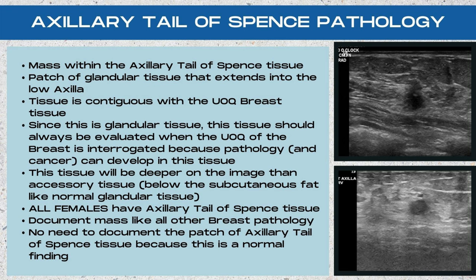All females have this axillary tail of Spence tissue, so it's important to evaluate it in every single patient when evaluating the upper outer quadrant of the breast. Document anything you find hiding in this tissue just like any other breast pathology — in two planes with and without measurements and with and without color Doppler. There's no need to specifically document the patch of axillary tail of Spence tissue itself, because this is considered a normal anatomical finding of the breast.